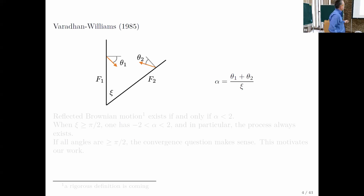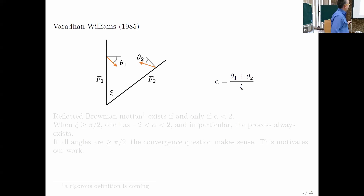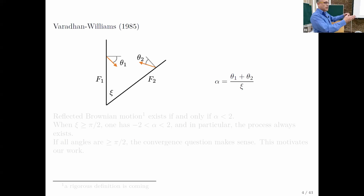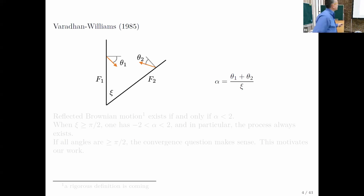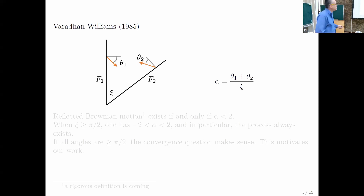Here's a corner — a wedge of angle psi. There are two faces f1, f2, and two directions. The angles are denoted by theta_1 and theta_2, which give the angle with respect to the inward normal, considered positive if the direction tends towards the origin. What was found by Varadhan and Williams was that this parameter alpha is of crucial importance to the problem — it dictates various things.